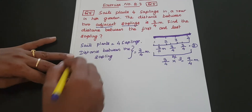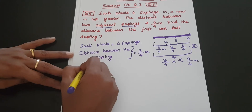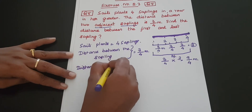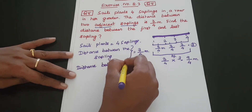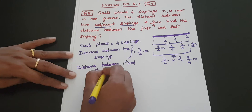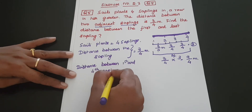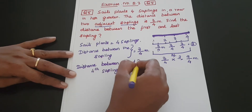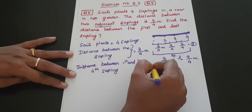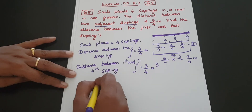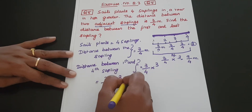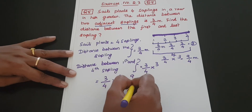The distance between the 1st and 4th sapling is equal to 3/4 into 3, which equals 9/4.